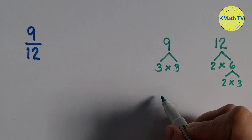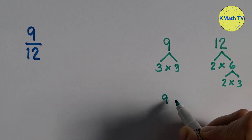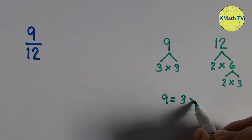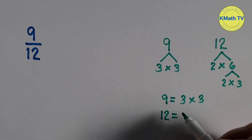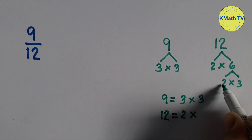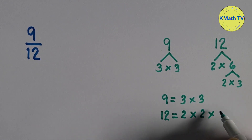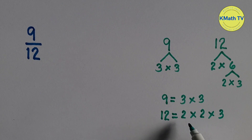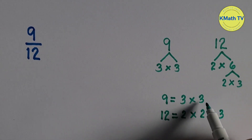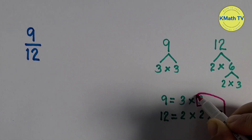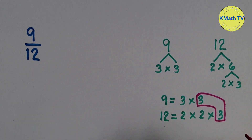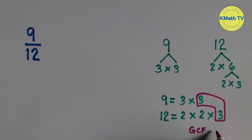Let's write the prime factors of 9 and 12. 9 equals 3 times 3. 12 equals 2 times 2 times 3. Now let's find the common prime factor of 9 and 12. A number that is a factor of both 9 and 12 is 3. There is only one pair of common prime factor, and it is counted as 1. Therefore, the greatest common factor or GCF of 9 and 12 is 3.